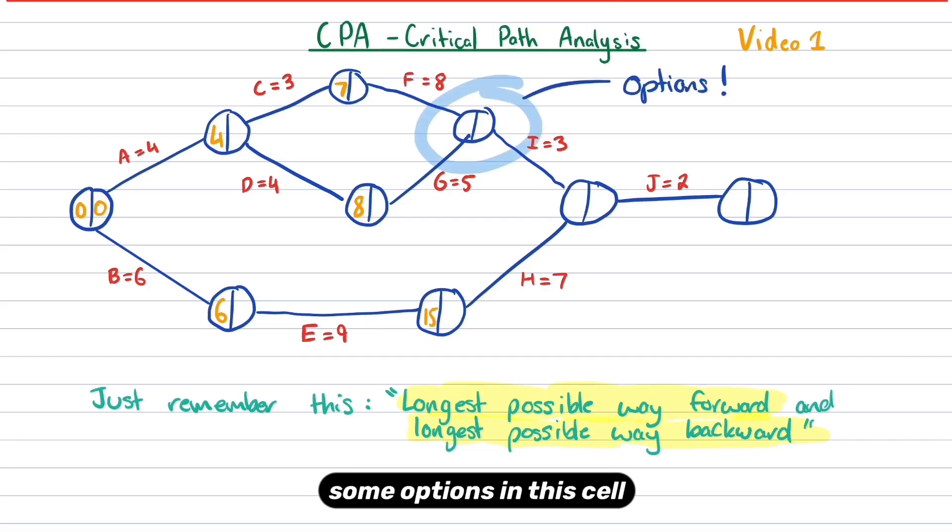Now, this is where we've got some options in this cell. So we could go three and eight, which is along the top, which equals 11. Or we could go four and five along the bottom, which is from D to G. Now, remember, we want to choose the longest way possible. So three plus eight is 11. Four plus five is nine. So we're going to go the three plus eight way, which means I'm going to do seven plus eight, which gives me 15. So that's the way that we have to go. We're going the longest possible way forward.